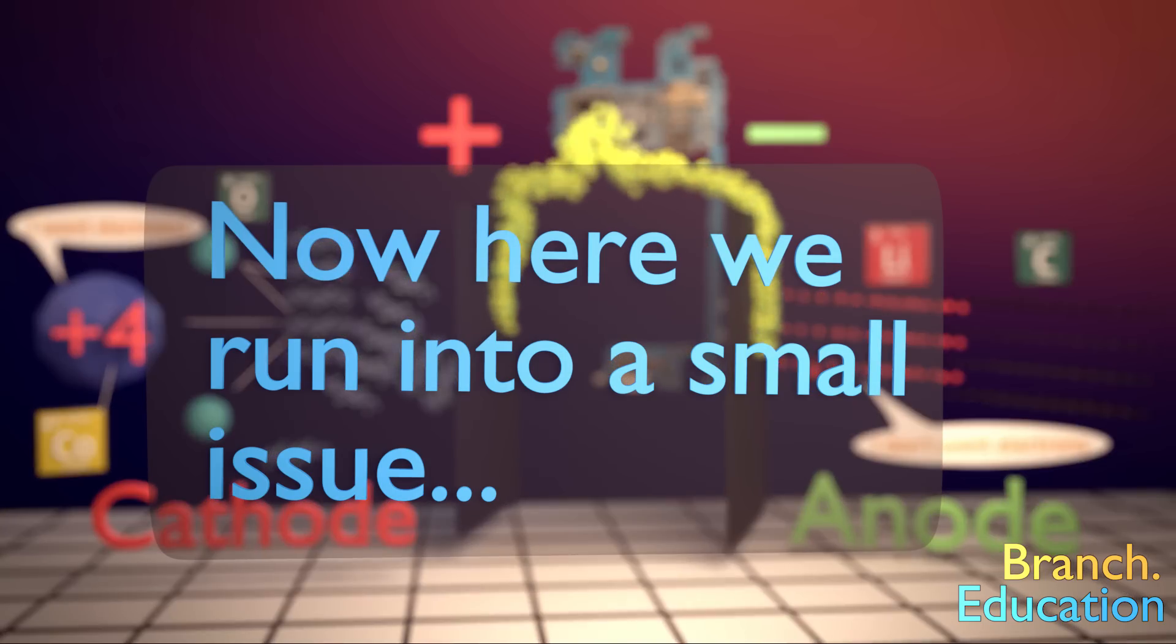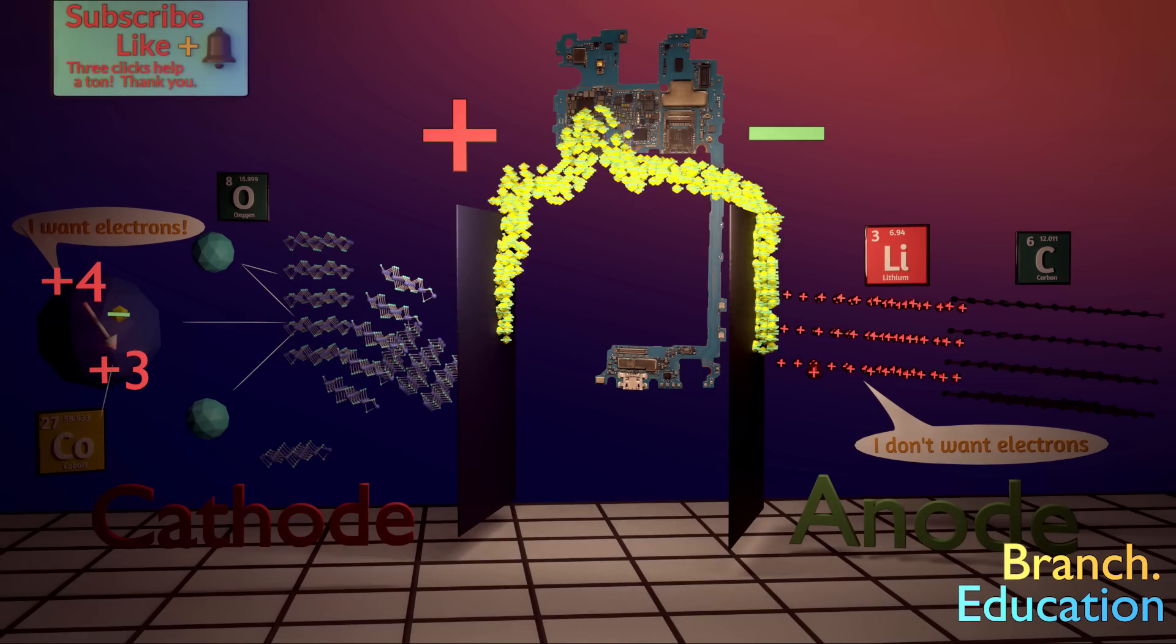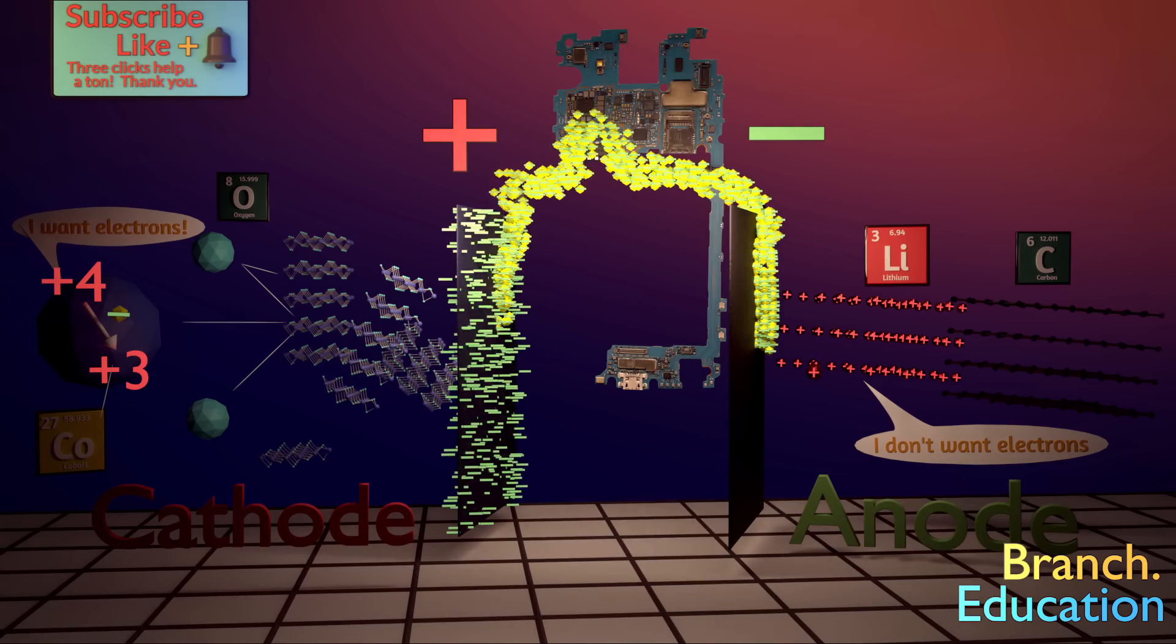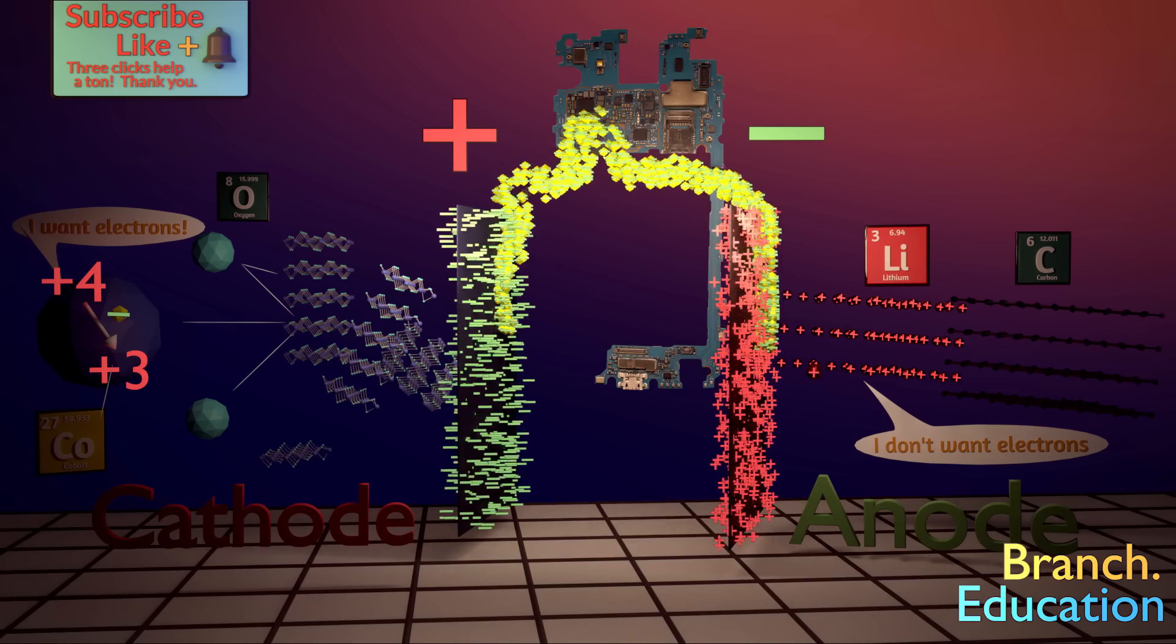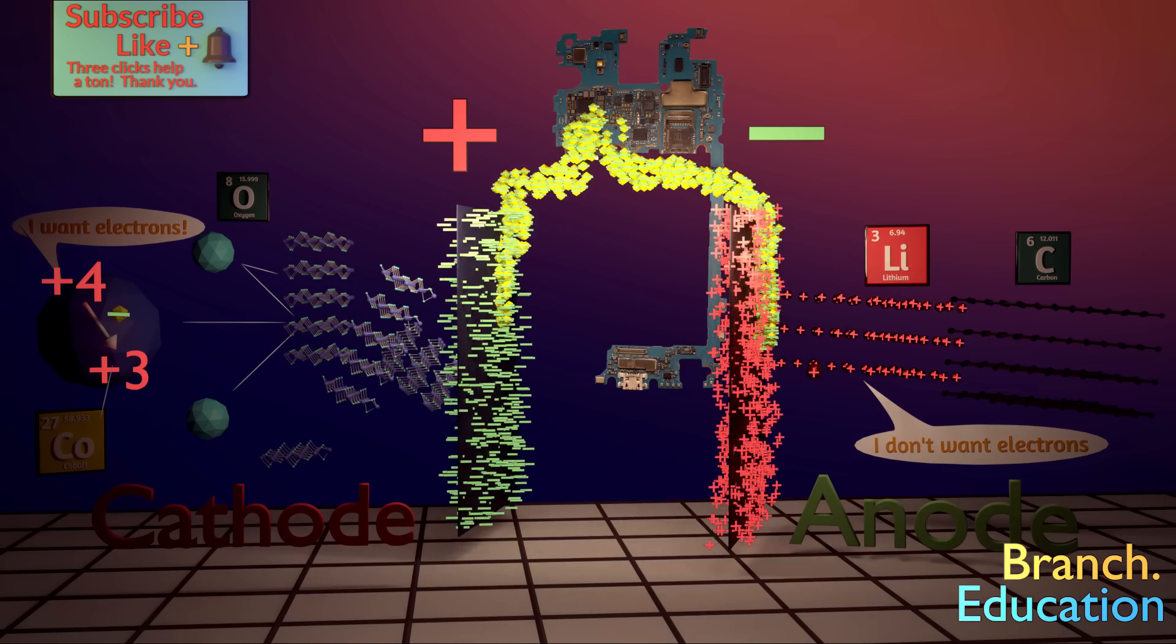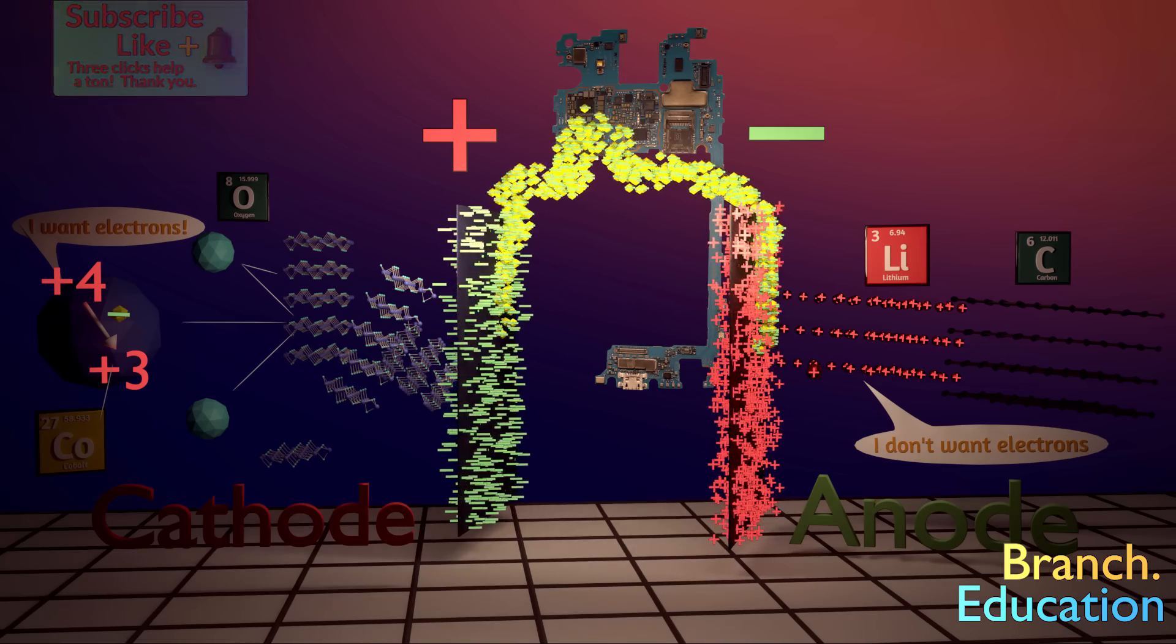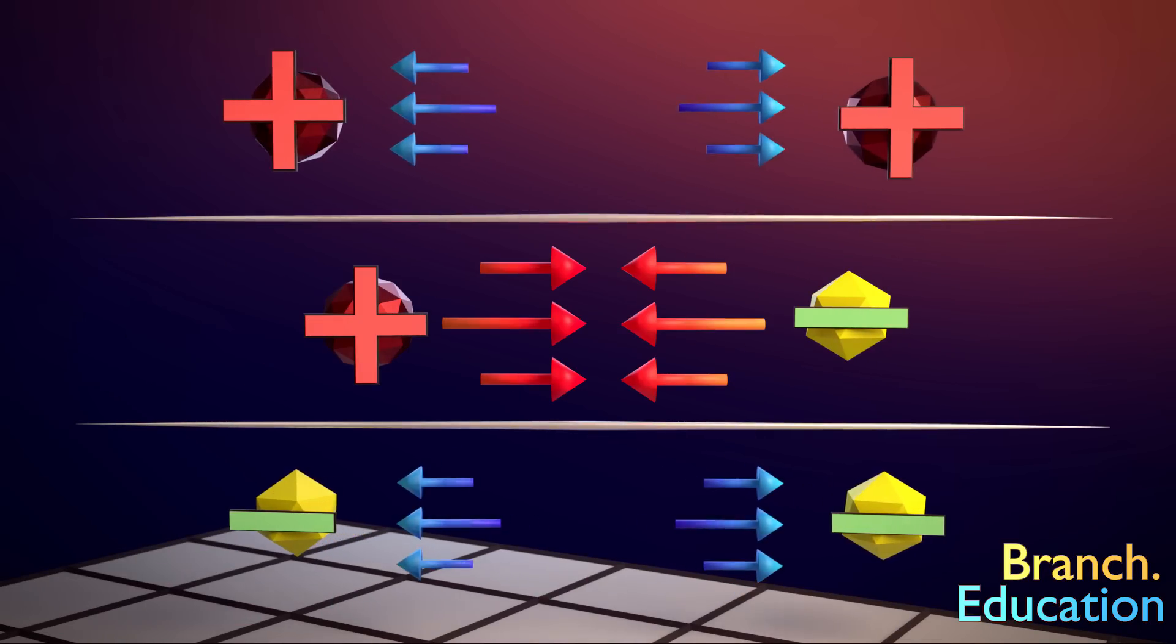Now here we run into a small issue. With the flow of electrons from the negative to the positive terminal, the cobalt side grows more and more negatively charged, and the other side positively charged. Yes, the electrons do want to flow in this direction, but at the same time electrons don't like to flow to an area that is growing more and more negatively charged. This is because opposite charges attract and similar charges repel.